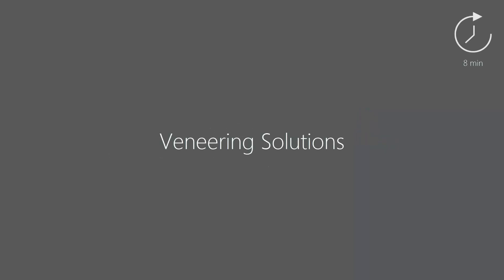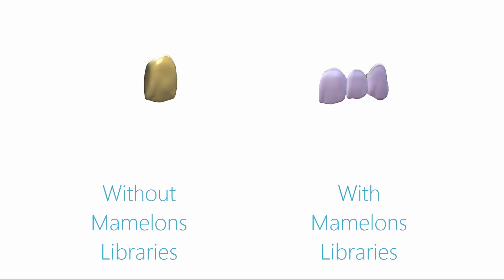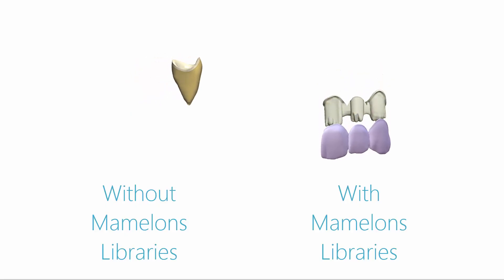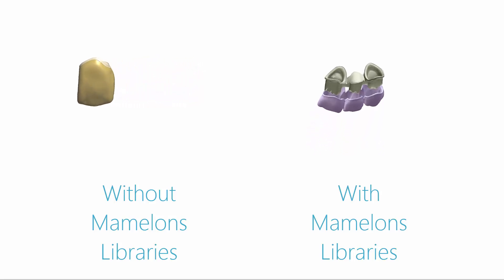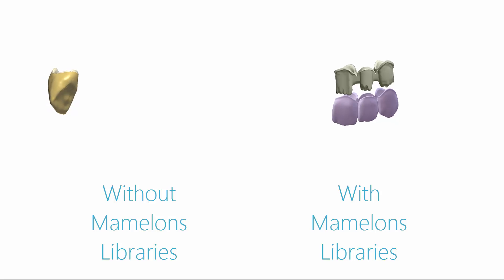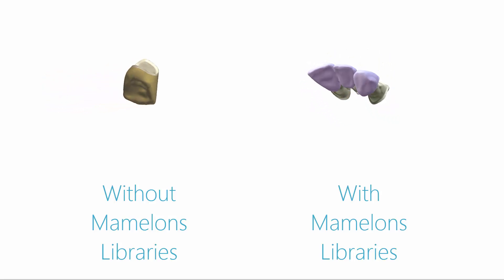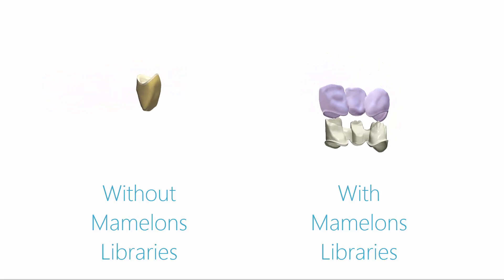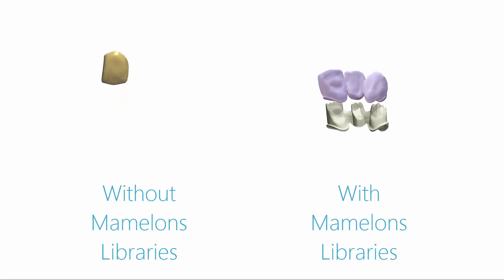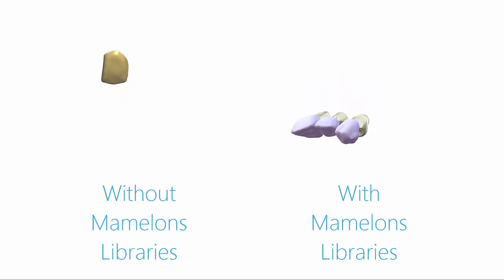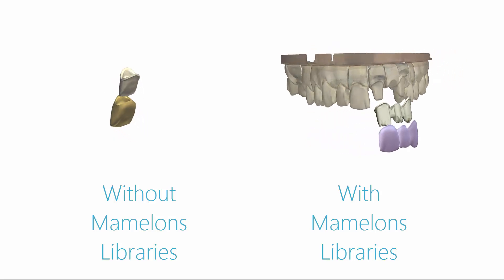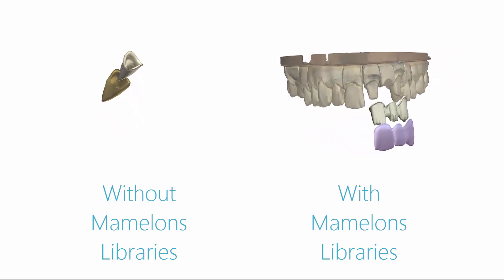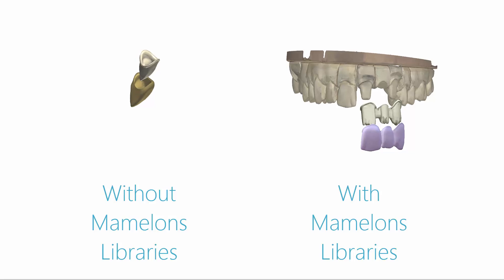In this video we will show you how to design a multi-layer bridge. This type of construction consists of a framework understructure and an anatomically shaped overlying structure in the form of full contour crayons or an anatomically shaped structure with marmelons. The multi-layer bridge workflow automatically splits full anatomy designs into two parts, completely without undercuts, and two separate files are also automatically created as an output for production.